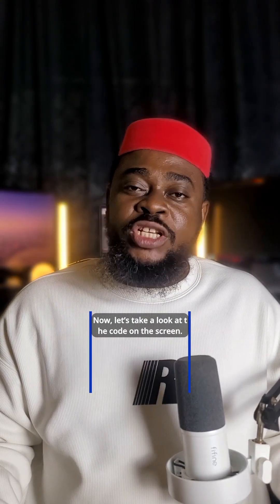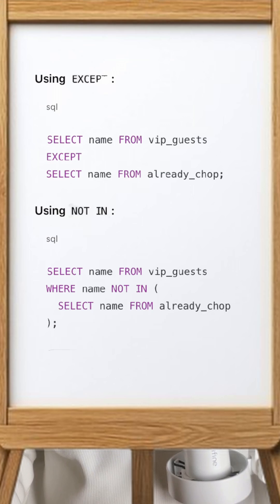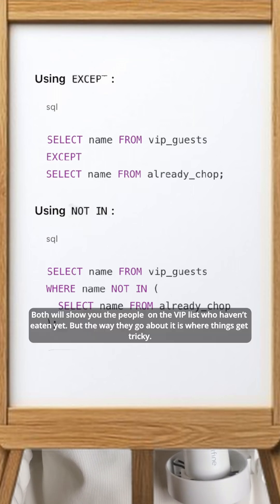Now look at the code on screen. Using EXCEPT, and then see this other one down below, if we dey use NOT IN. So you see, both go show you people on the VIP list but never chop yet.